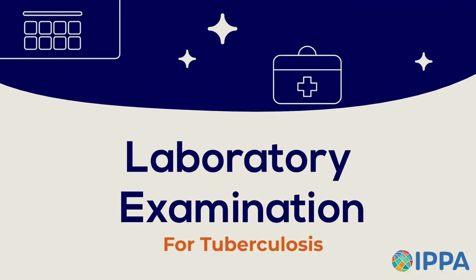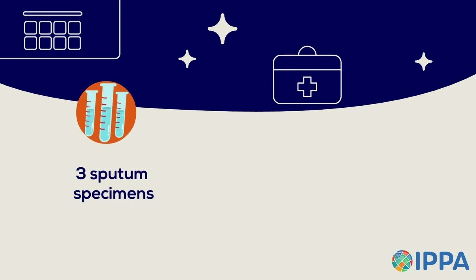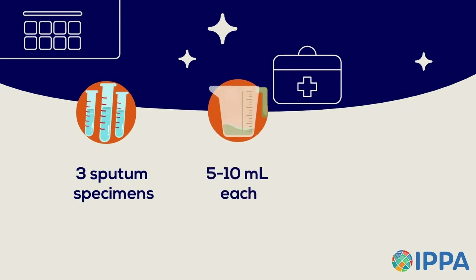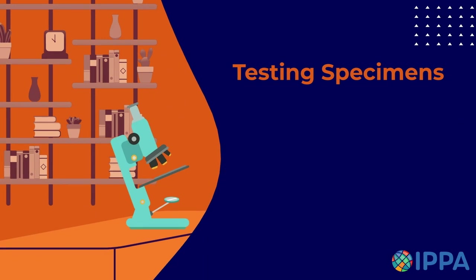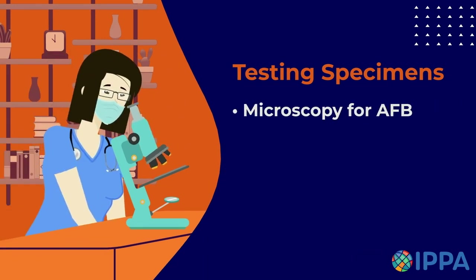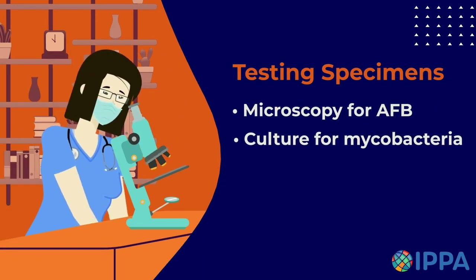Laboratory examination for tuberculosis disease must consist of at least three sputum specimens, each consisting of 5 to 10 milliliters. Specimens must be collected at least 24 hours apart, preferably on consecutive working days.